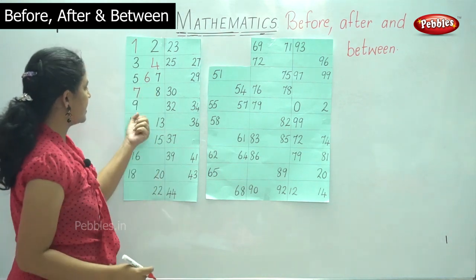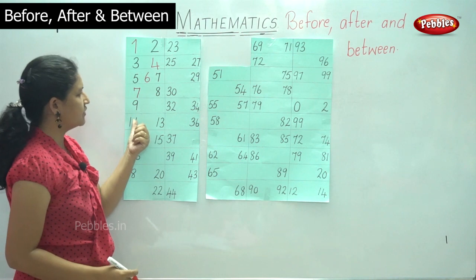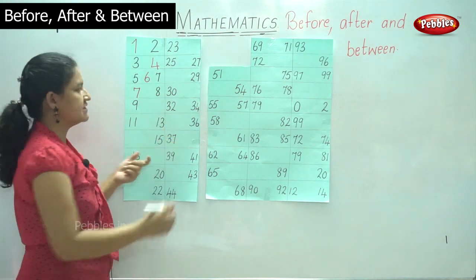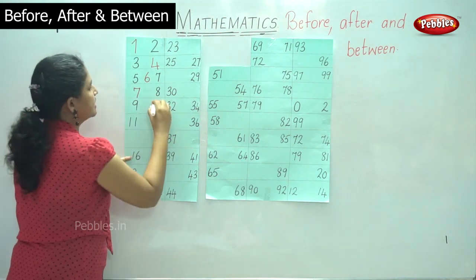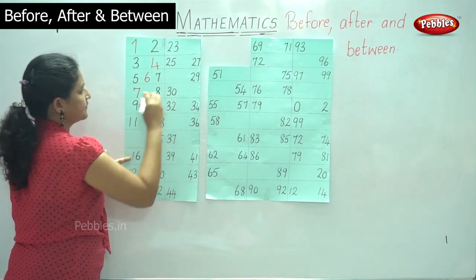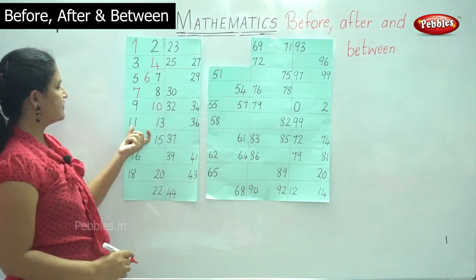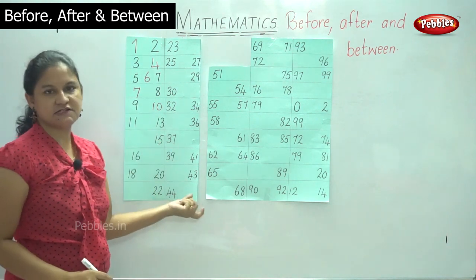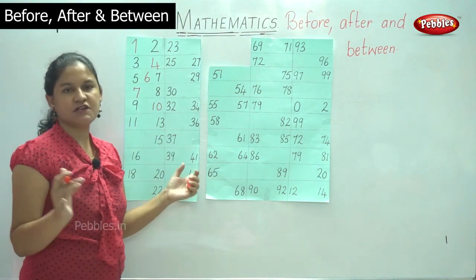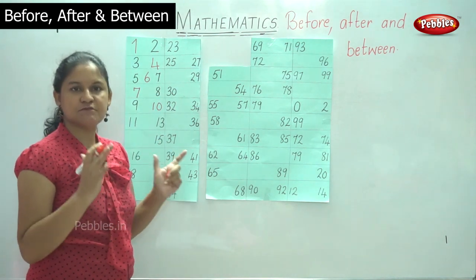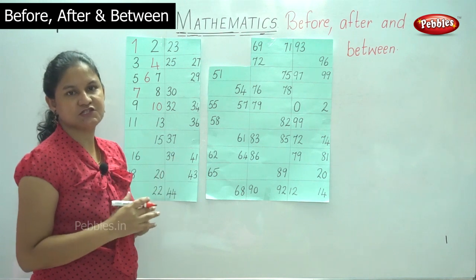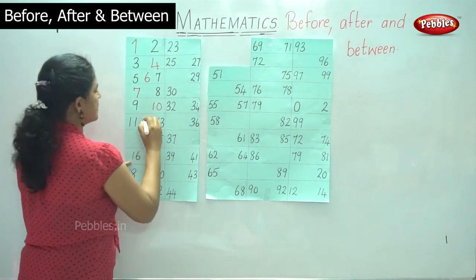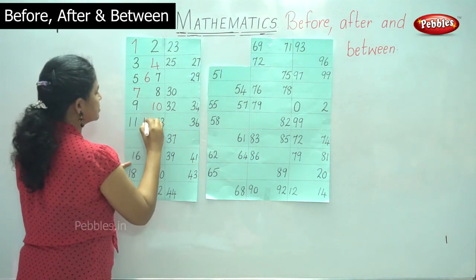Then we have number nine. What comes after nine? It is number ten. Then we have the numbers eleven and thirteen, and what number comes between these two numbers? It is number twelve.